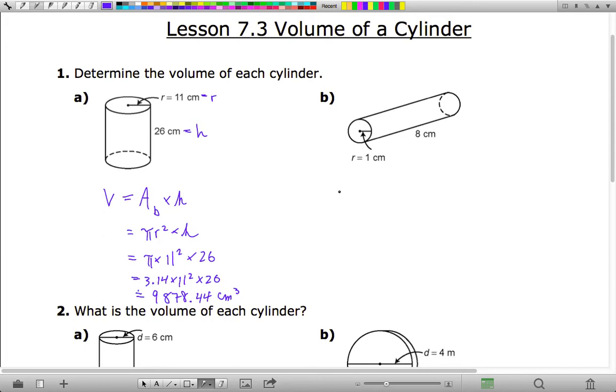So again, the same thing applies here. The thing to keep in mind for a cylinder is that when you're looking at the height, the height is not necessarily a vertical thing, but rather it's a distance between the two circular ends.